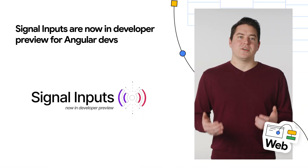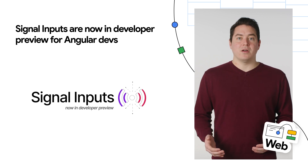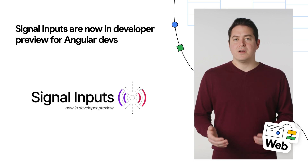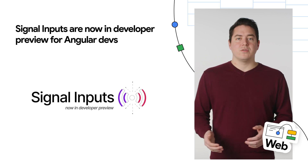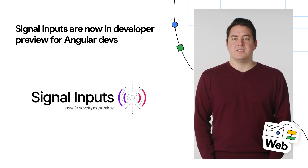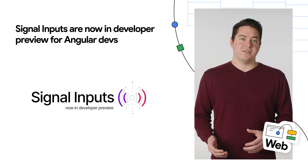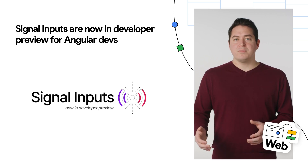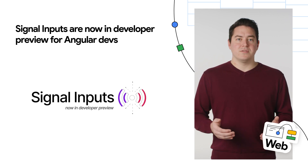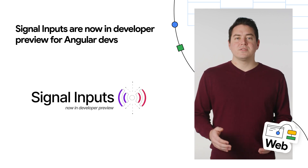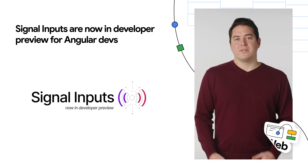Starting with Angular, signal inputs are now in developer preview. Signals provide a powerful reactivity model that enables you to efficiently monitor changes, derive values, and automatically notify Angular when any specific part of your application needs to be re-rendered. Signal inputs can also improve your application by automatically marking on-push components dirty, being more type-safe, and can be derived and used in other signals. This can also be easily monitored when using effects. You can learn more on the Angular blog.